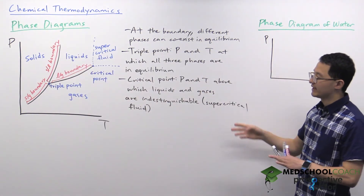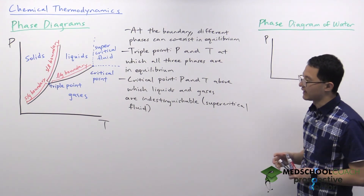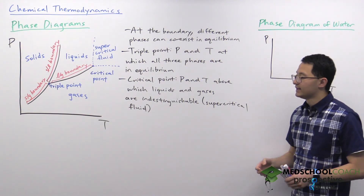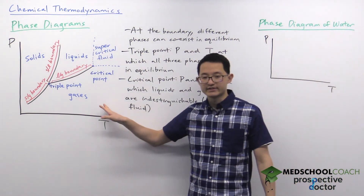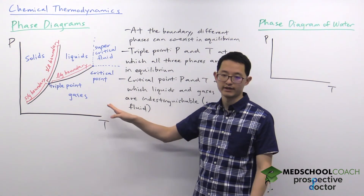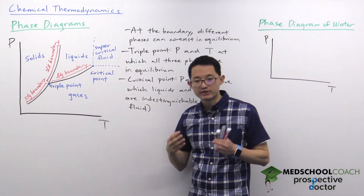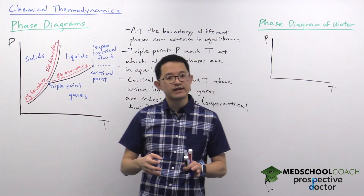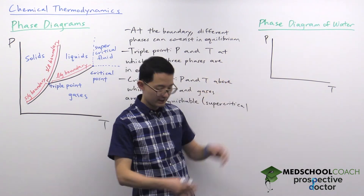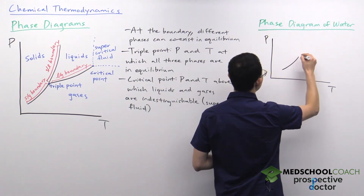Those are the main components of the phase diagram you want to be familiar with for the MCAT. Another important related topic is that the phase diagram we've discussed represents what the majority of compounds in the world look like. But there is a unique compound whose phase diagram looks slightly different — and that's water. Let's look at the phase diagram of water and see how it differs.